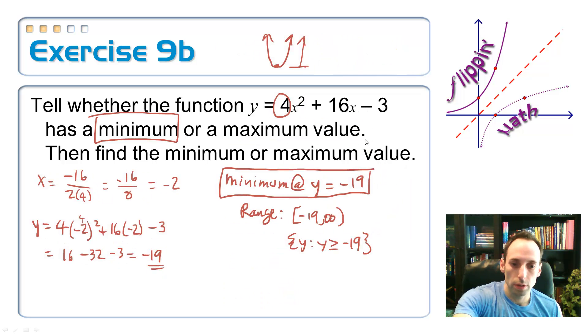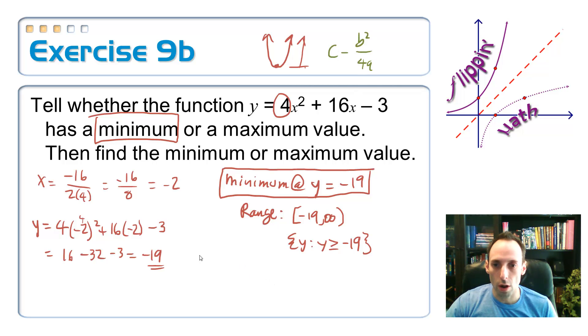So the same deal, it is c - b²/(4a). So write down here. I've got y equals, c is my -3, minus b², 16² is 256, over 4 times a, which is 4.